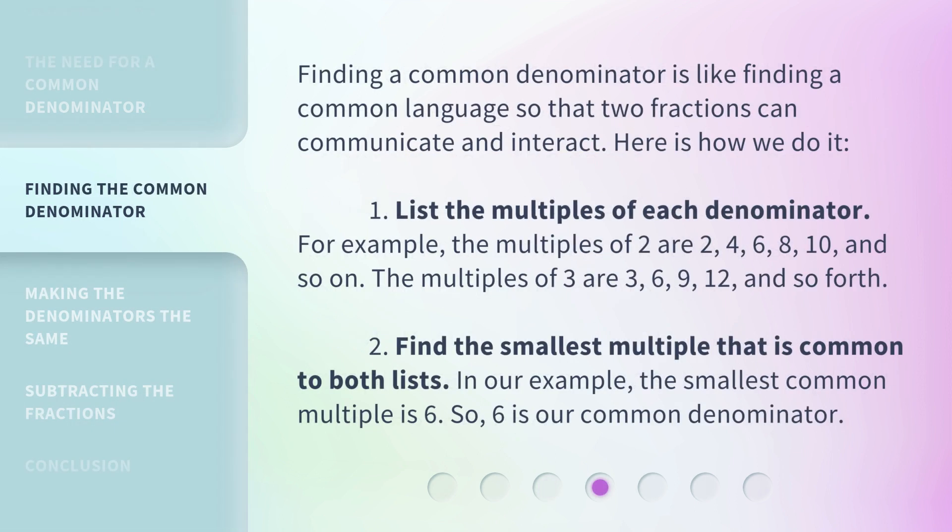Finding a common denominator is like finding a common language so that two fractions can communicate and interact. Here is how we do it. 1. List the multiples of each denominator. For example, the multiples of 2 are 2, 4, 6, 8, 10, and so on. The multiples of 3 are 3, 6, 9, 12, and so forth.